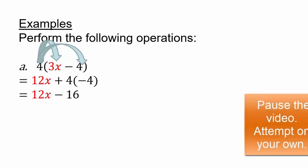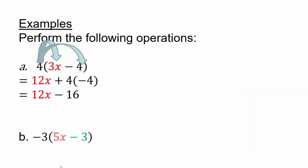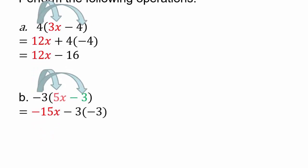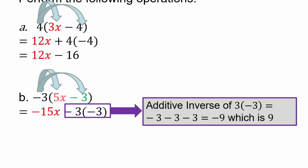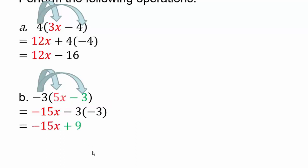Pause the video and see what happens with negative 3 times (5x minus 3). We have negative 3 times 5x and negative 3 times negative 3. That gives us negative 15x minus 3 times negative 3. Let's explore: 3 times negative 3 is negative 9, so negative of that — the additive inverse — is positive 9. Therefore our final answer is negative 15x plus 9.